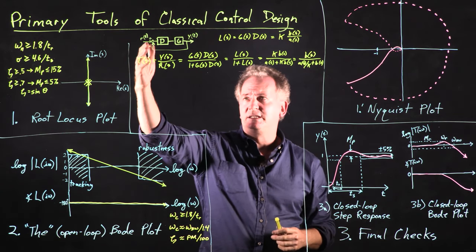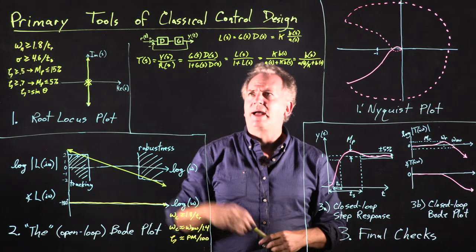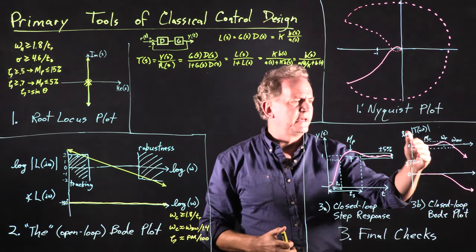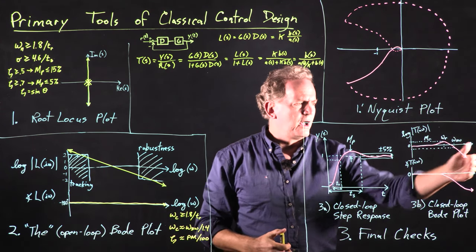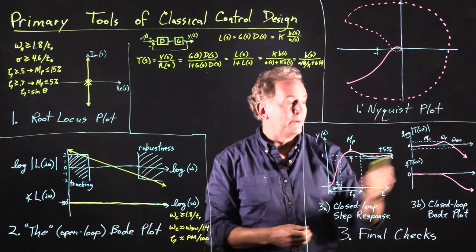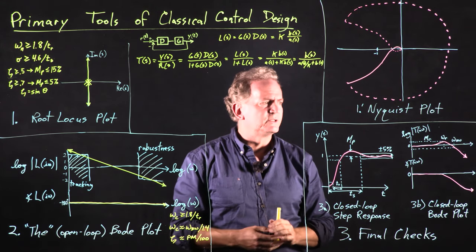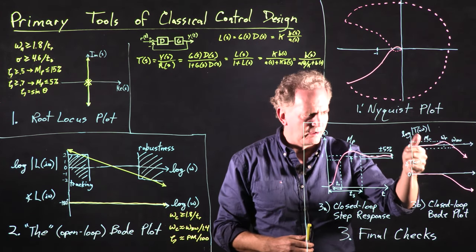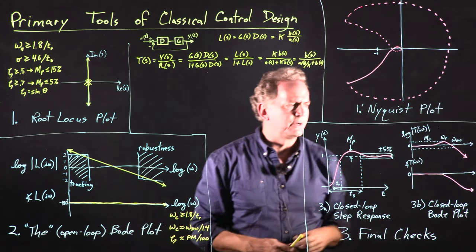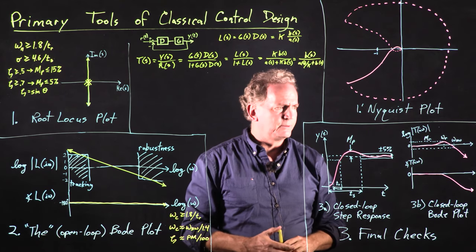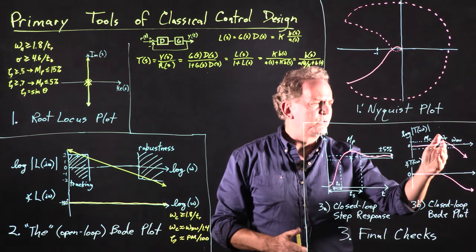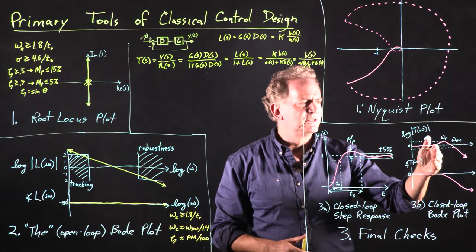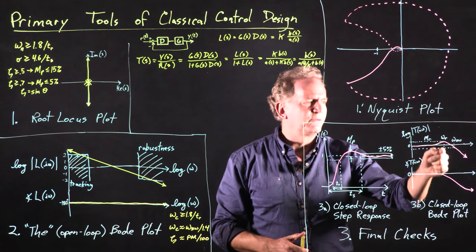For low-frequency excitations, the output is a sinusoid at the same frequency, about the same magnitude and phase. At higher frequencies, after we've designed our closed-loop system well, the magnitude begins to trail off. On a Bode plot of the closed-loop system, we can characterize a couple of features: the frequency after which the magnitude drops below 0.7 is called the bandwidth frequency, omega_BW. We can also look at one or more peaks in the response before that, which we refer to as resonances.